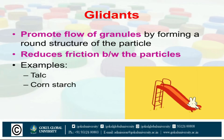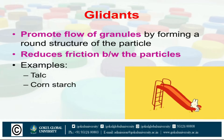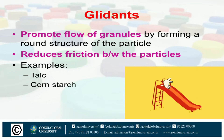Next is glidants. Glidants promote flow of granules by forming a round structure of the particle and reduce the friction between particles. Some examples are talc and corn starch.